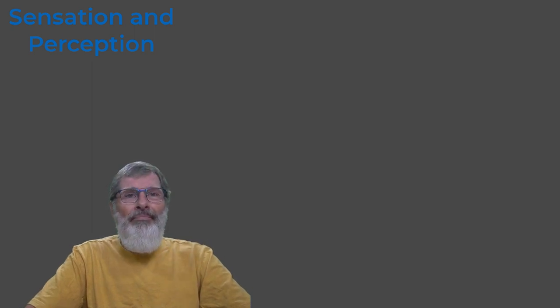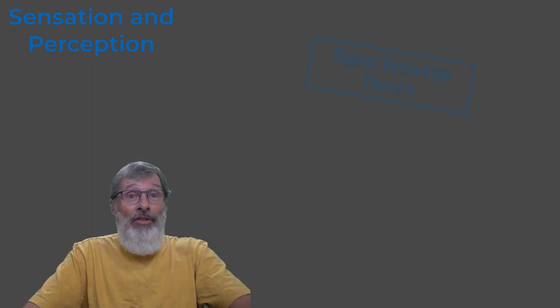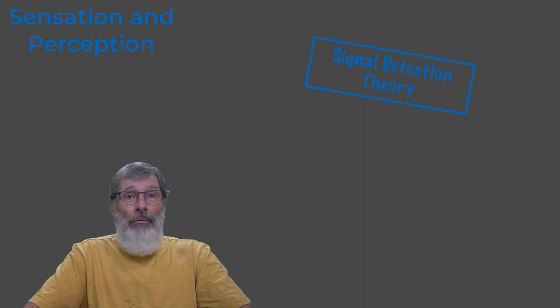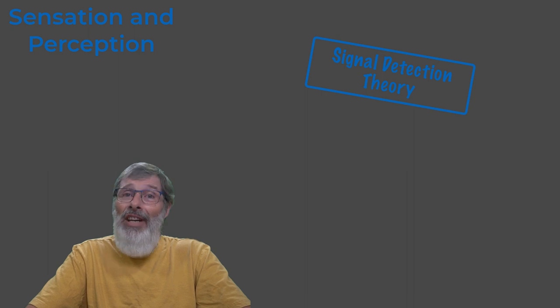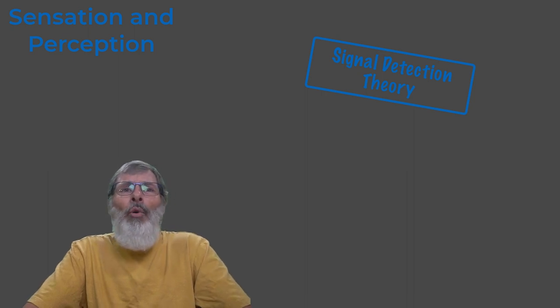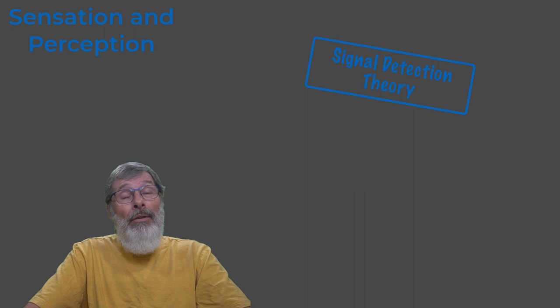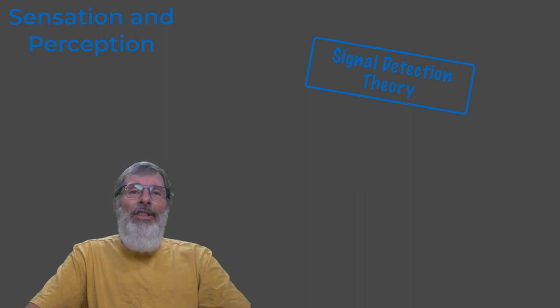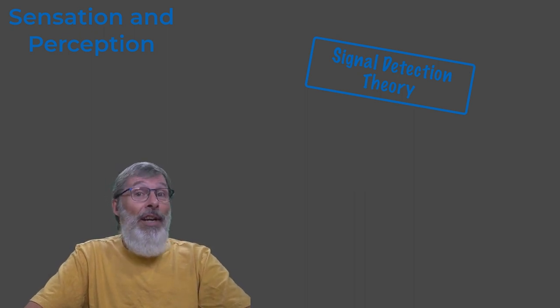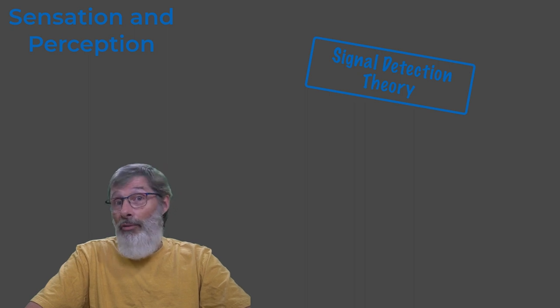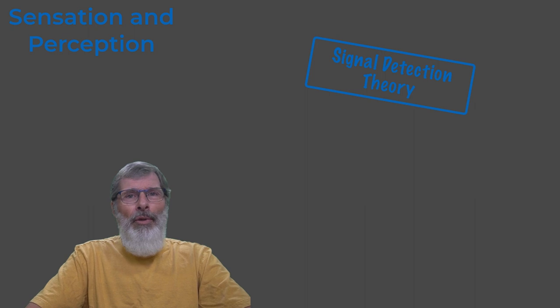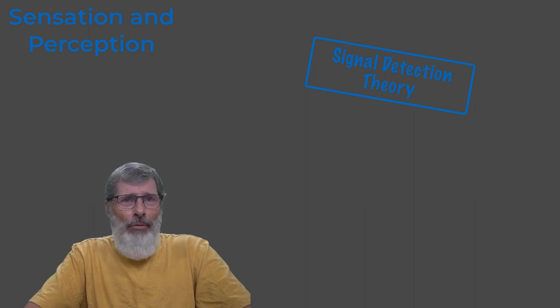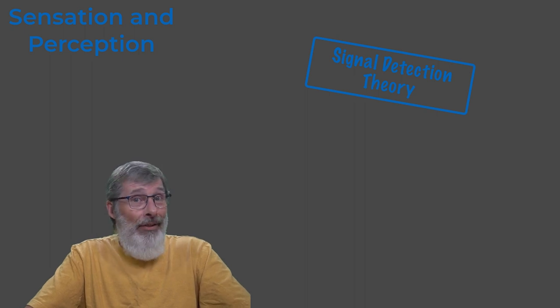Now there are some theories. One of the theories associated with our vision is what's known as signal detection theory. Signal detection theory considers the human aspect of sensation and perception, and also assumes that the relationship between physical stimuli and the sensory response is not just mechanical, that there are other factors involved.